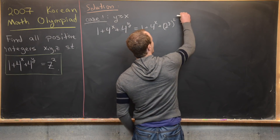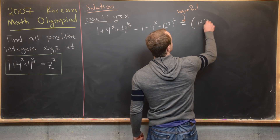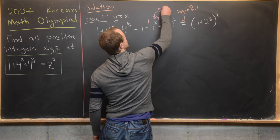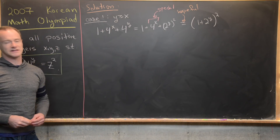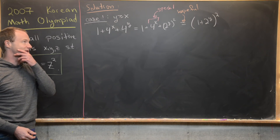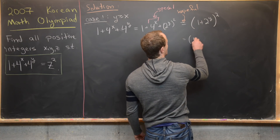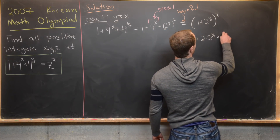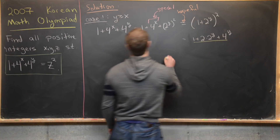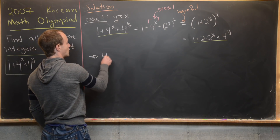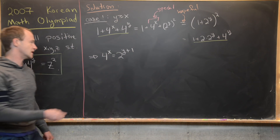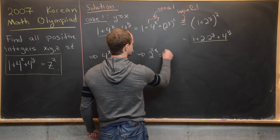We can try the factorization given by (1 plus 2 to the y) quantity squared. This will only work for special values of x that make the two quantities match. If those two quantities were the same, the left hand side would be a perfect square. Let's multiply this out: (1 plus 2 to the y)² equals 1 plus 2 times 2 to the y plus 4 to the y. For equality, we need 4 to the x to equal 2 to the y plus 1, which is the same as 2 to the 2x equals 2 to the y plus 1.